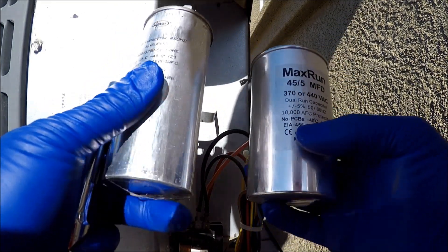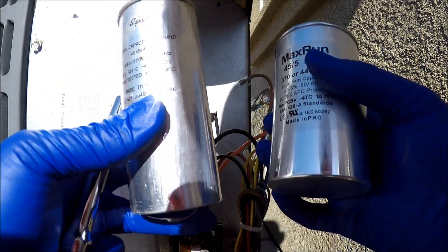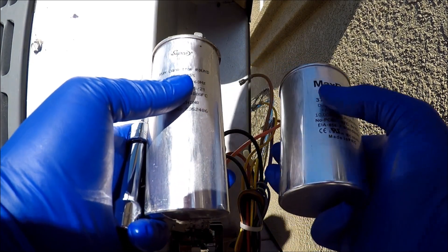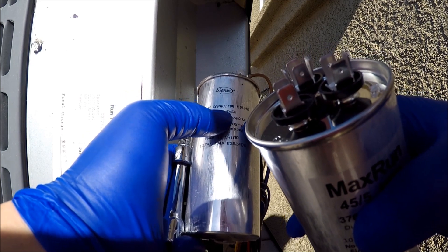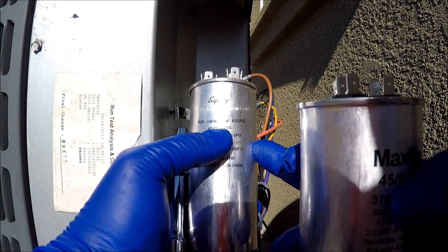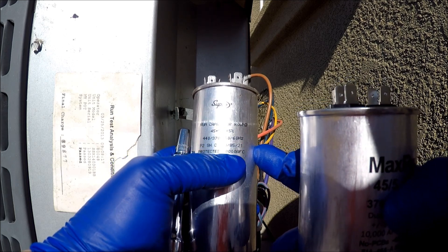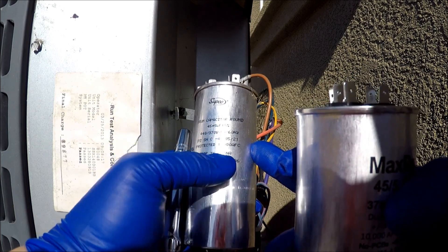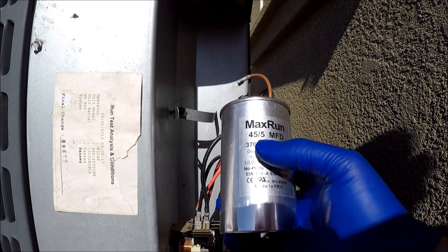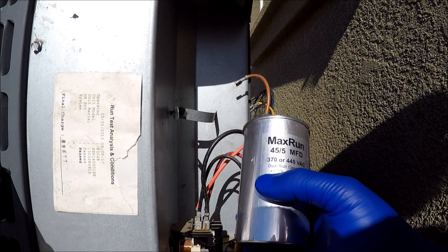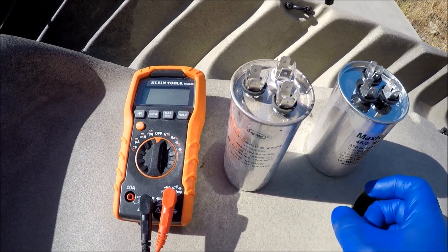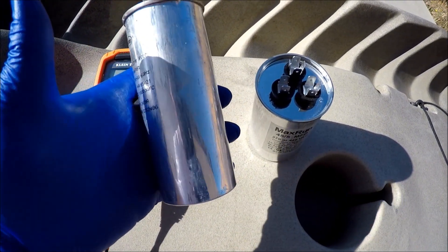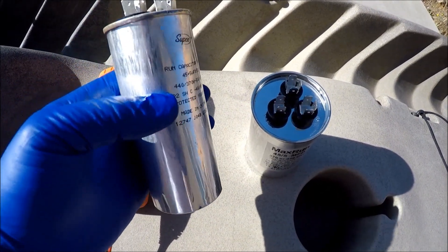As you can see, the size is a little different. This is much thicker and shorter, this one is taller and skinnier. But that doesn't really matter. All you are looking for is the numbers here. Right there, the old one says 45 plus 5. 45 microfarad for the compressor and 5 microfarad for the fan, plus minus 5%. And 50 and 60 hertz. A lot of times when the capacitor goes bad they swell up, it's really obvious. In this case it looks perfectly normal from the outside.